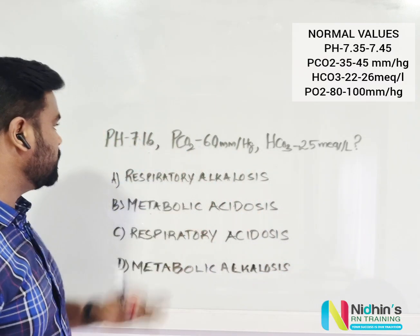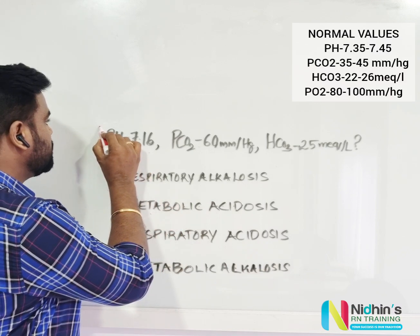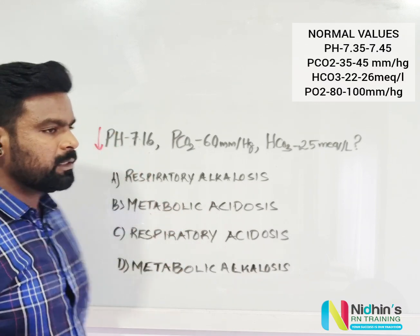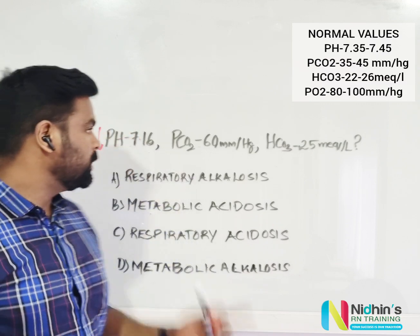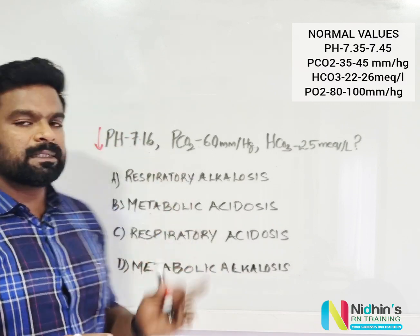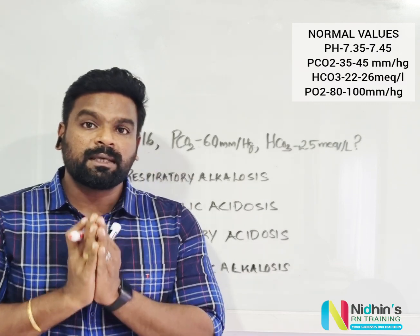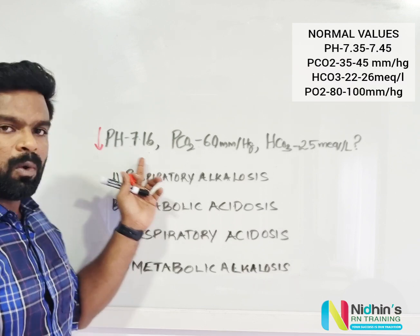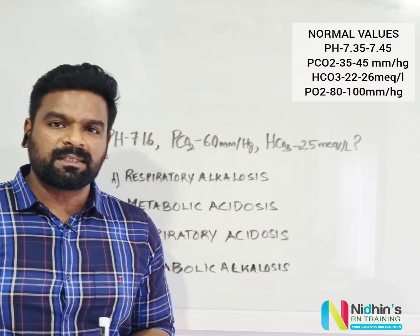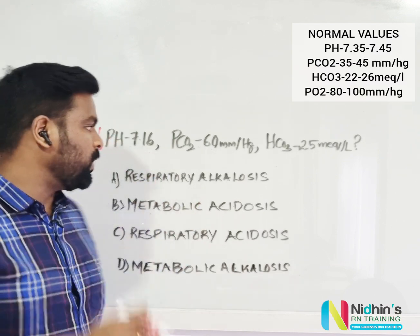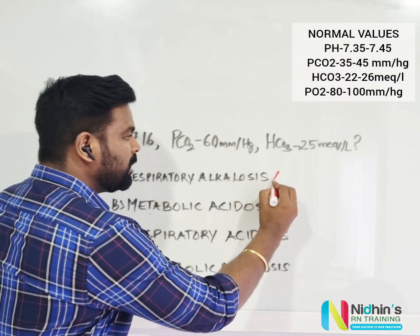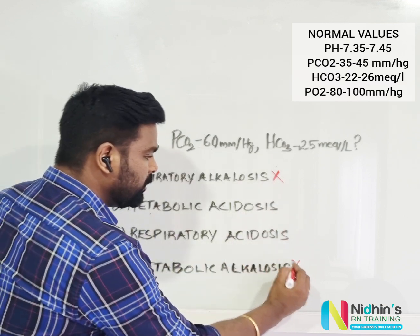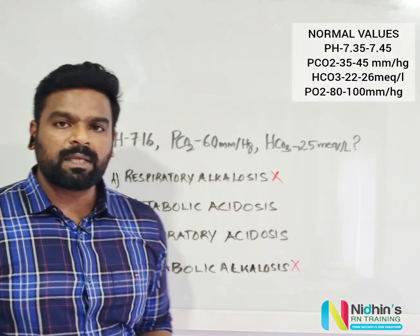Here pH is low. Whenever pH is low, it is always acidosis. The normal pH is 7.35 to 7.45, so low pH always means acidosis. Because of this, we can delete the alkalosis options — we have deleted options A and D.